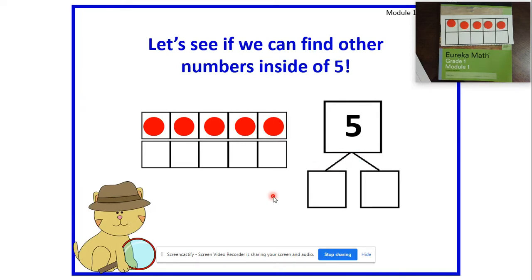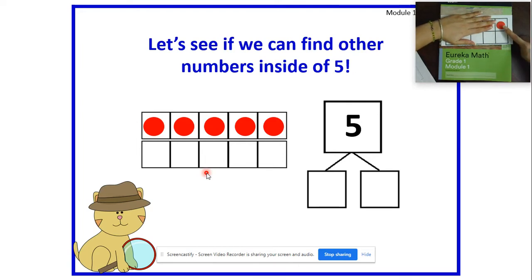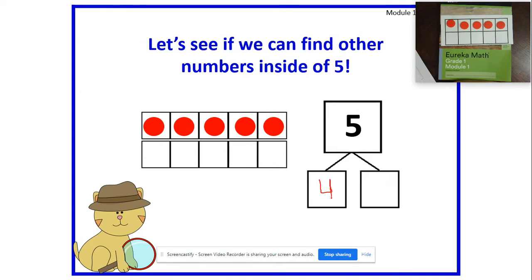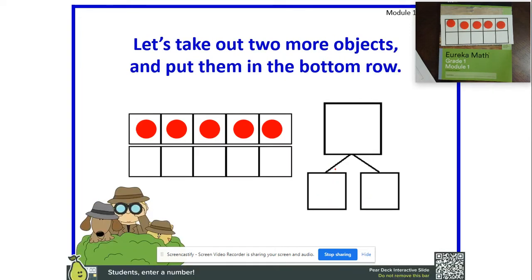Let's see if we can find different numbers inside of five. I'm going to give you a couple of seconds to think about what other numbers you see hiding inside five. Remember, you're detectives hunting for numbers. We already saw two and three — what other numbers do we see? Did I hear someone say four and one? Let's see: if we cover up four, we have one — that makes up five. So we would write four as one part and one as our other part.